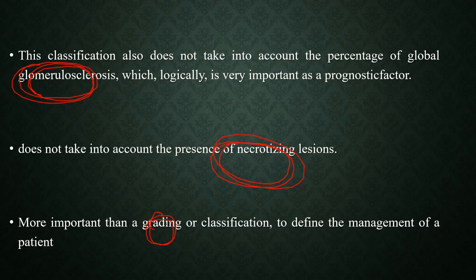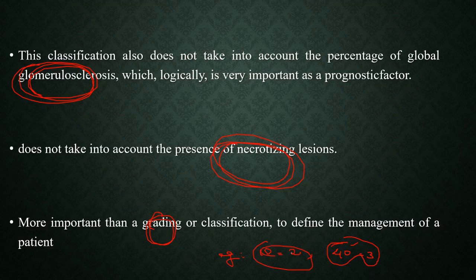Another demerit: it can't give exact prognosis scoring. For example, one biopsy has 10 glomeruli with two segmental glomerular scleroses; another biopsy has 40 glomeruli with three segmental scleroses. Grossly, the second might appear to have more sclerosis, but proportionally the first is worse. So biopsy reports must be interpreted considering the total number of glomeruli.